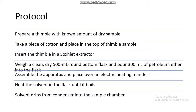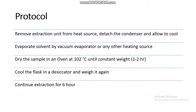Protocol: Prepare a thimble with a known amount of dry sample and place a piece of cotton on top of the thimble. Insert the thimble into the Soxhlet extractor. Weigh a clean dry 500 ml round-bottom flask and pour 300 ml of petroleum ether into it. Assemble the apparatus on an electric heating mantle and heat until the solvent boils and drips from the condenser into the sample chamber. Remove from heat, detach the condenser, and allow to cool. Evaporate the solvent using a vacuum evaporator, then dry the sample in an oven at 102 degrees centigrade for 1 to 2 hours until constant weight. Cool the flask in a desiccator, weigh it, and continue extraction for 6 hours.